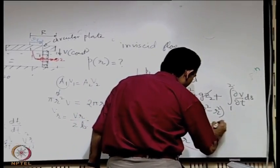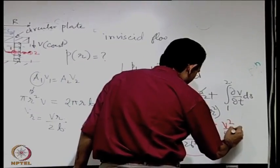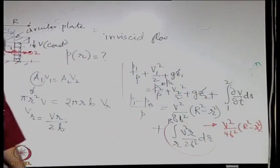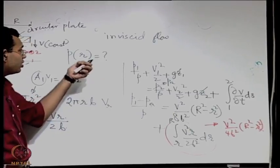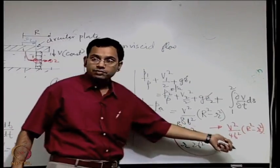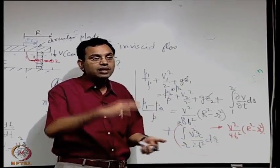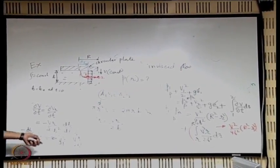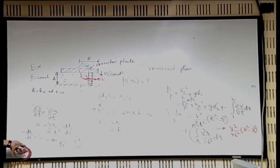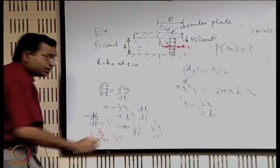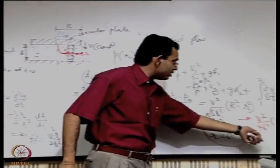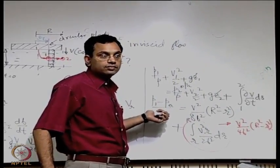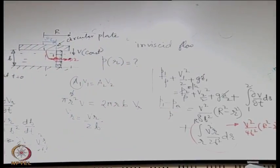The complete expression gives pressure at radius r as a function of time because B is a function of time. At a given instant, with a known value of B, the pressure at any r can be found. Since dB/dt = -v (constant plate speed), we have B = B₀ - vt. Given a particular time t, you find B = B₀ - vt and substitute to get the pressure at that radius. This example clearly demonstrates how the unsteady Bernoulli's equation can be utilized.